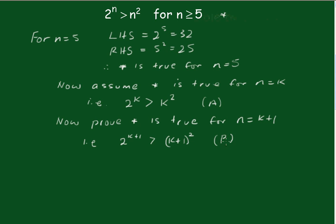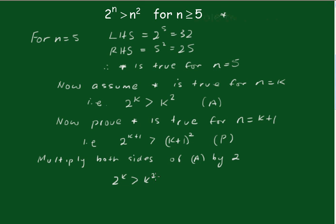Now what I'll do here is multiply both sides of the assumption by 2. Which makes this: 2 to the k is greater than k squared, and we're going to multiply both sides by 2. Of course that makes 2 to the k plus 1 is greater than 2k squared.